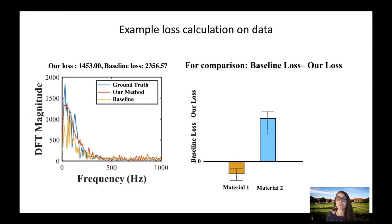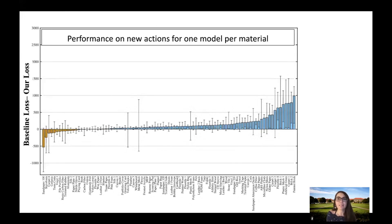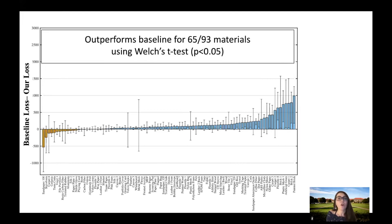For a direct comparison to the baseline, we first train one model per material by only feeding the action representation vector into the acceleration predictor module and removing the texture representation vector. Our model significantly outperforms the baseline model in 65 out of 93 materials using Welch T-tests in this situation.